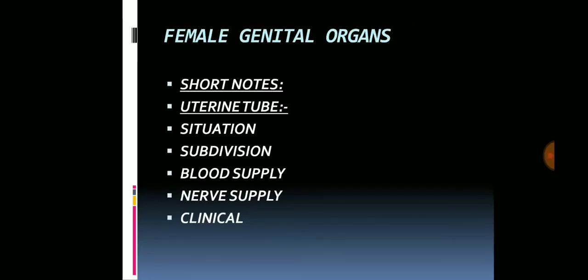Moving on to female genital organs. Short notes come on the uterine tube. If a question is asked on this, you have to write on the situation, subdivisions, blood supply, nerve supply, and clinical aspects.